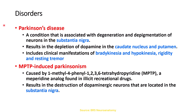Parkinson's disease is caused by damage of the substantia nigra. The substantia nigra contains dopamine, so once it is damaged there is a decrease in dopamine level. This causes depletion of dopamine in the caudate and putamen — in the striatum — and also decreased dopamine to the subthalamic nucleus.